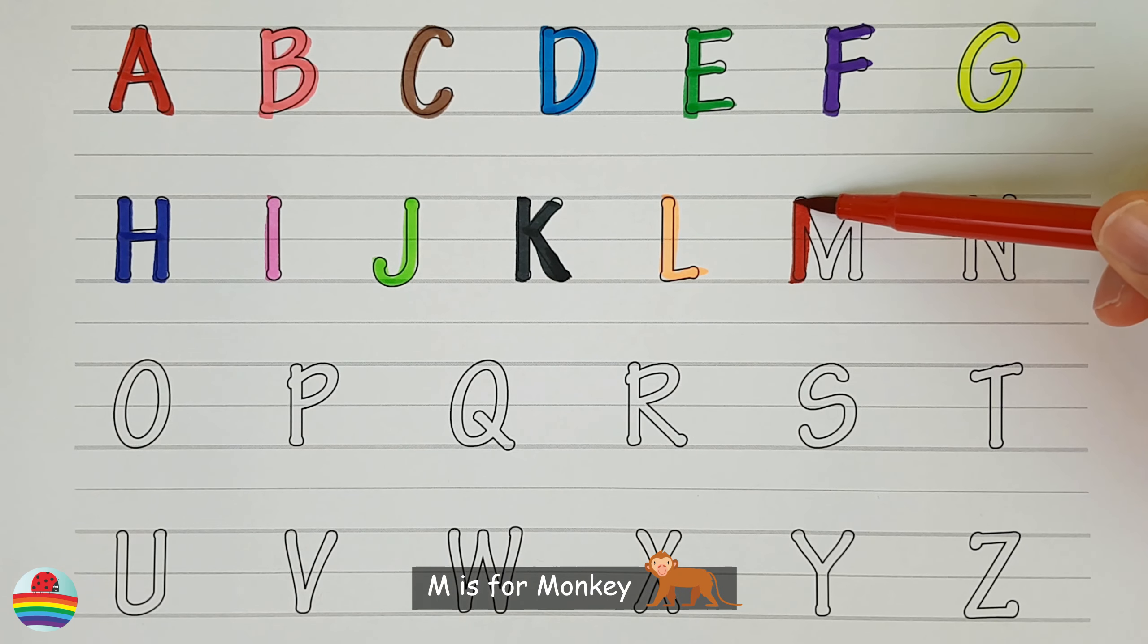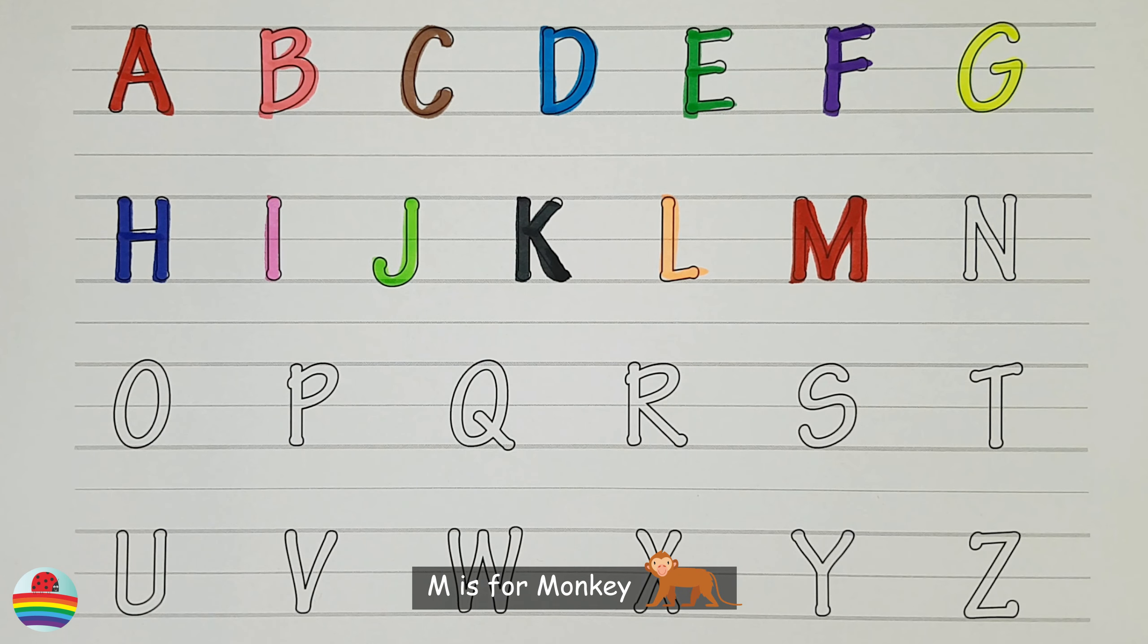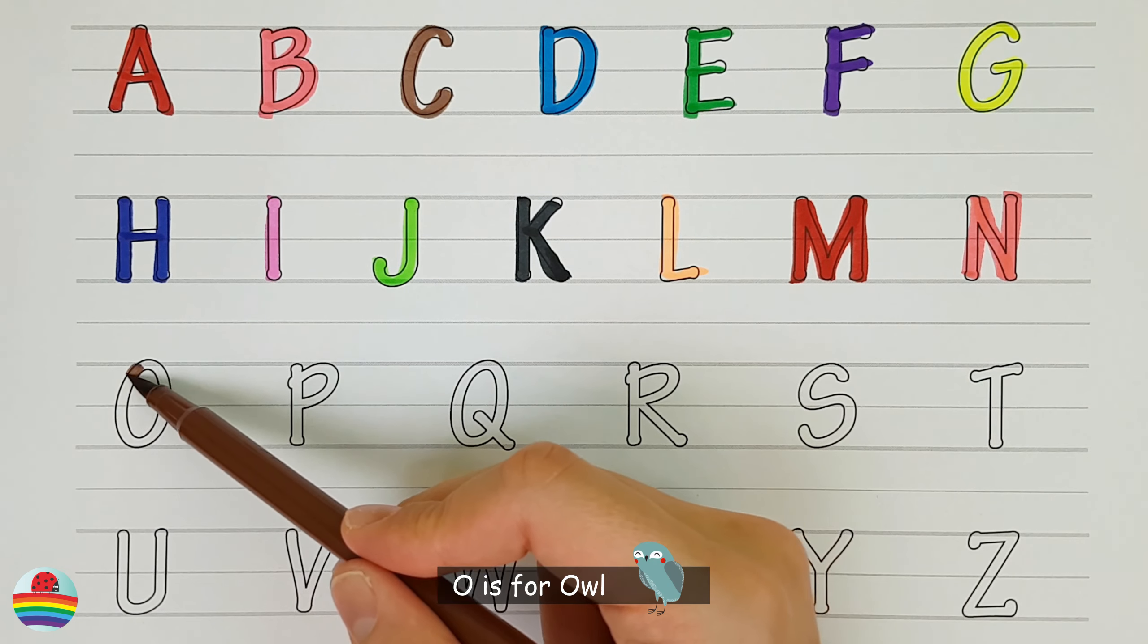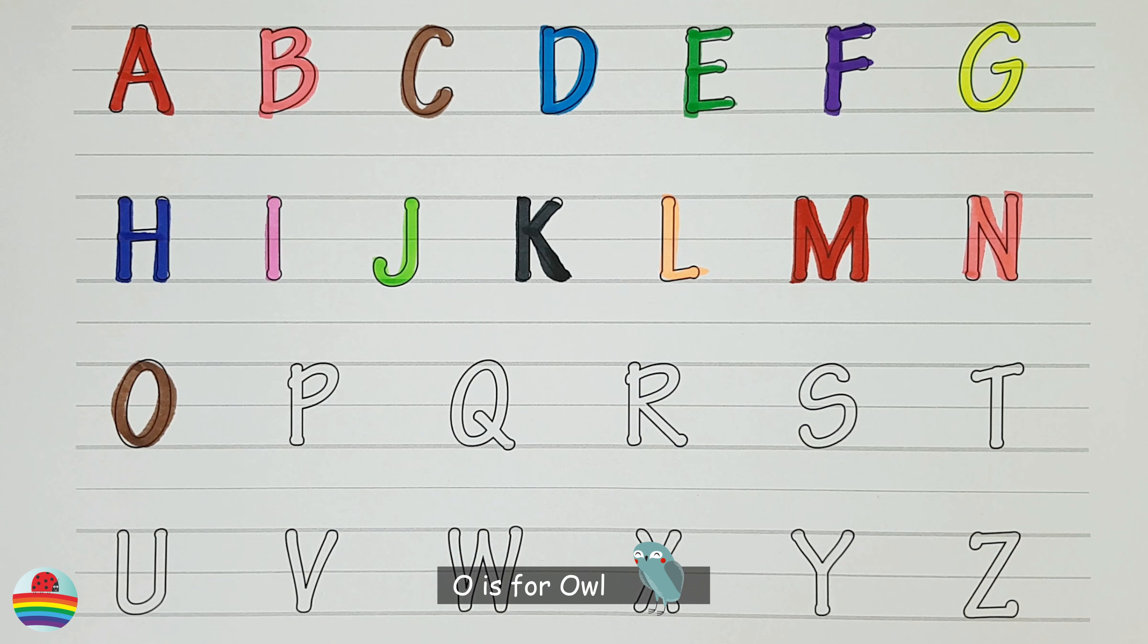M. M is for monkey. M. N. N is for narwhal. N. O. O is for owl. O.